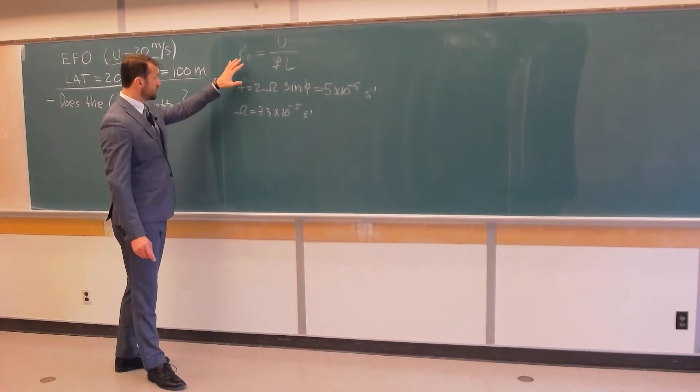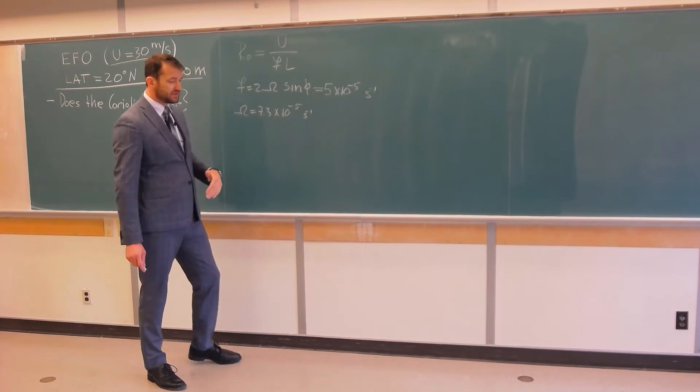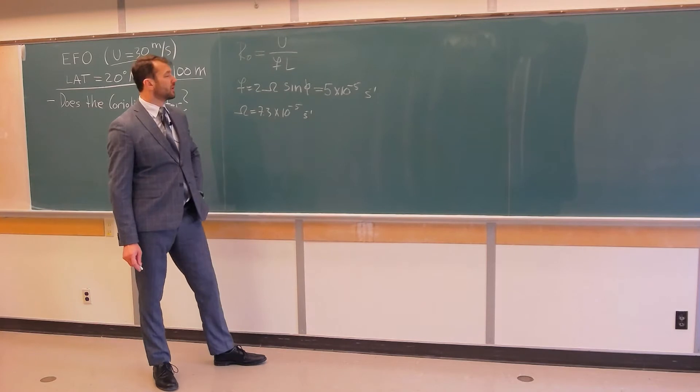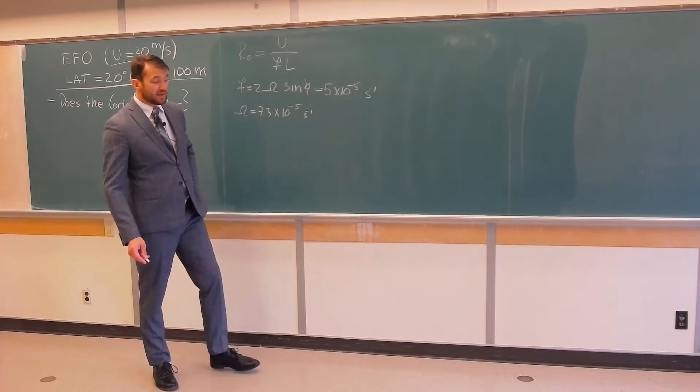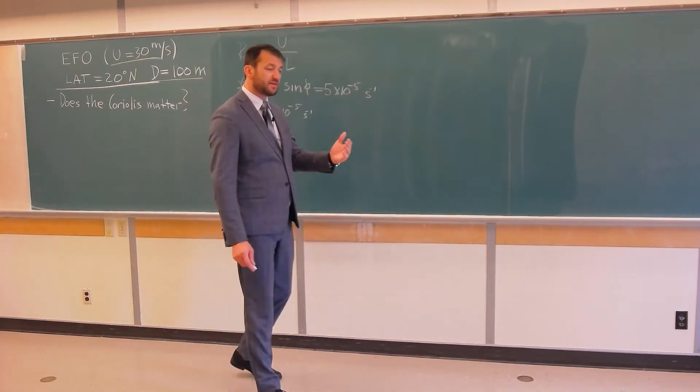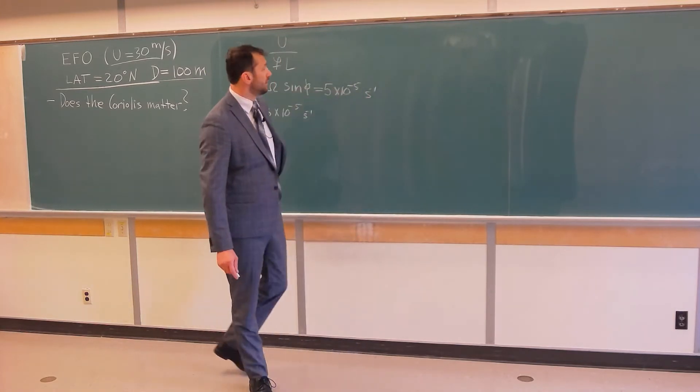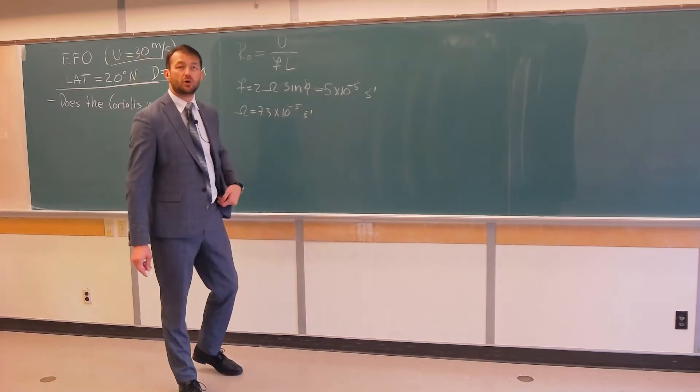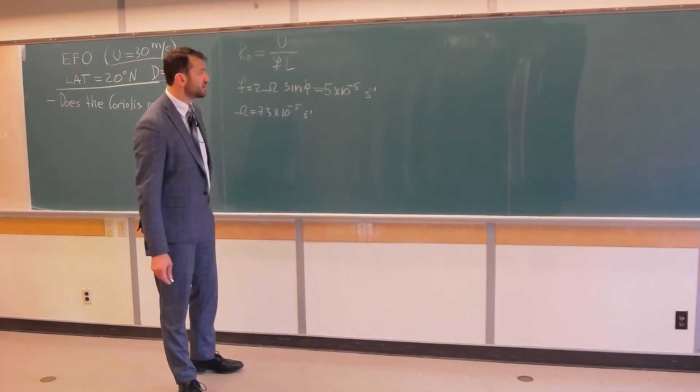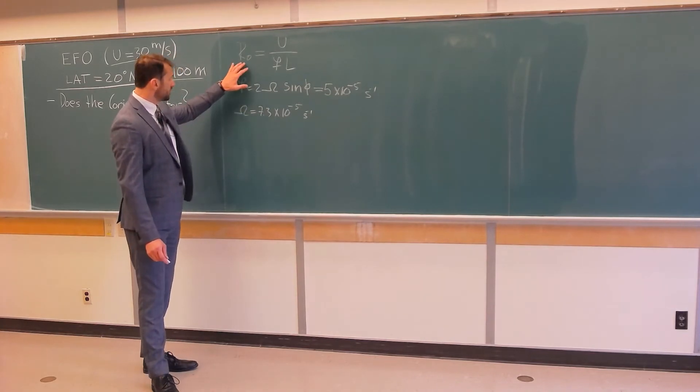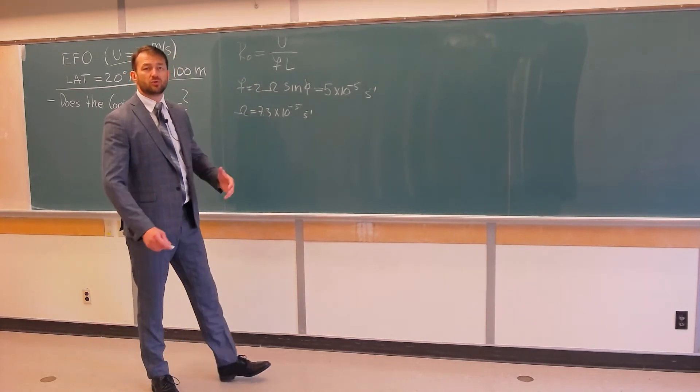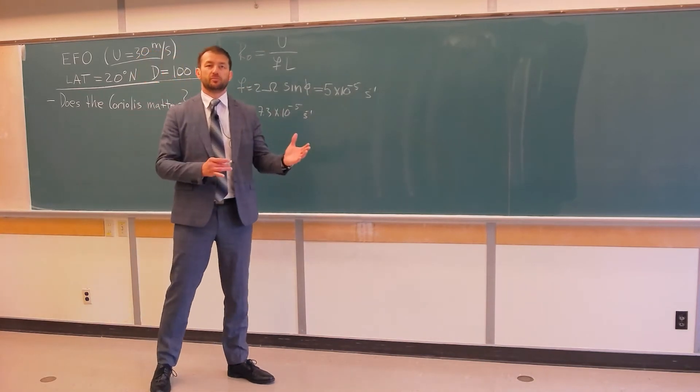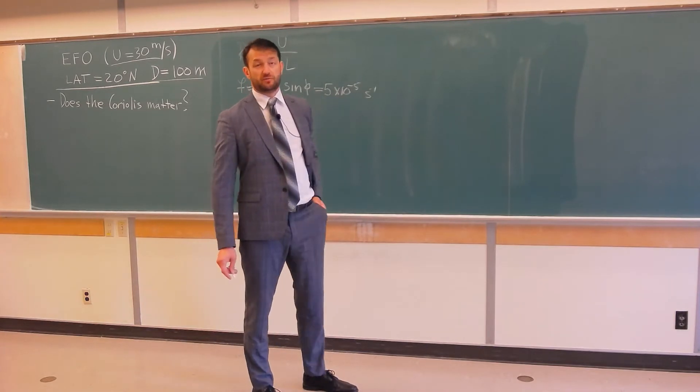Well, we need to know that the Rossby number represents the ratio of the inertial forces and the Coriolis force. If the Rossby number is very, very large, then the inertial forces dominate the flow field, and Coriolis force is not so important. If the Rossby number is the order of magnitude of 1, or around 1, then the Coriolis force is equally important, of equal strength, as the inertial forces.